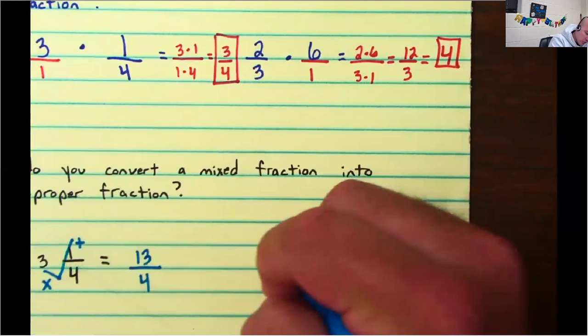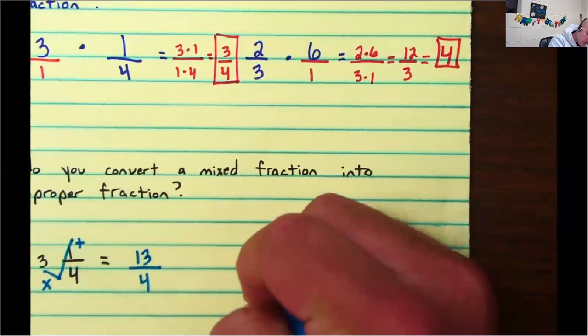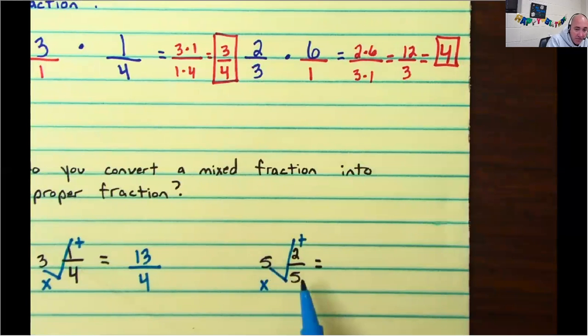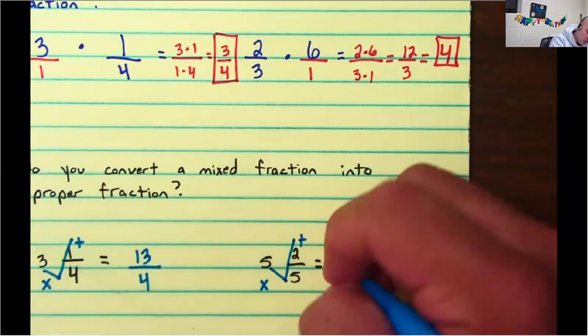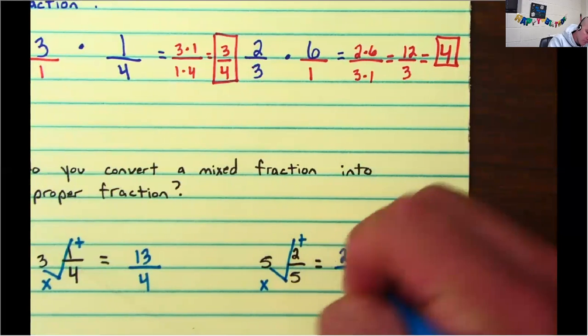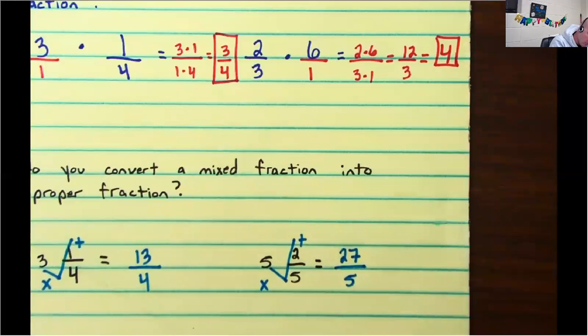Let's try it again. So again, when you go down, you multiply. When you go up, you add. Five times five is 25. 25 plus two is 27. Denominator stays the same. Alright. That's it. That's how you convert a mixed fraction into an improper fraction.